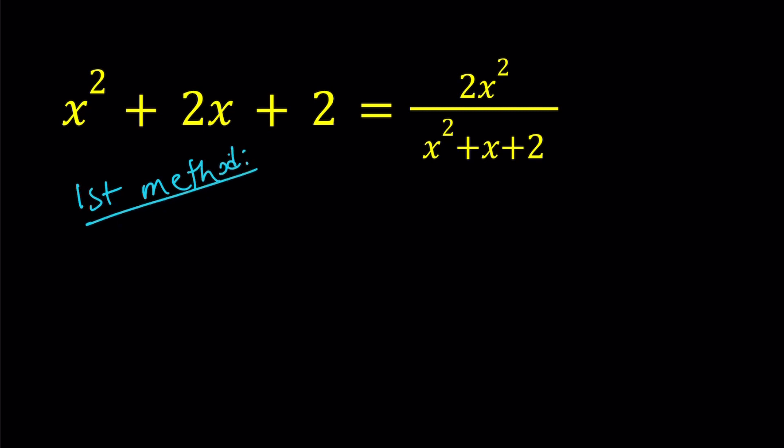My first method basically involves what I just said. We're going to brute force this, so let's go ahead and cross multiply. When you multiply x squared plus 2x plus 2 by x squared plus x plus 2, you're going to get a quartic and then we'll subtract 2x squared. But one of the nice things about this equation is that the denominator can never be equal to 0 for real values of x. So, we don't have to worry about making that undefined or any extraneous solutions here. So, that's kind of cool.